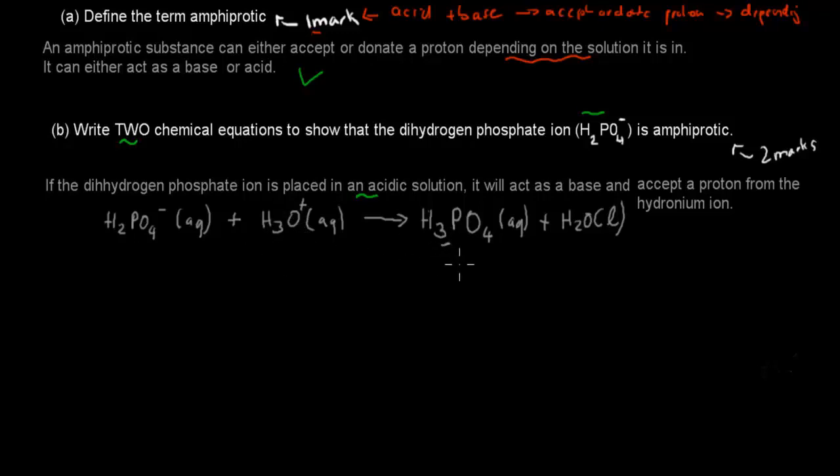And thereby become H3PO4, and the actual hydronium ion will turn into water, because this has donated its proton, and therefore the dihydrogen phosphate ion has acted as a base by accepting a proton. That's the first one, and then you obviously go over the other scenario, when it's in a base solution.